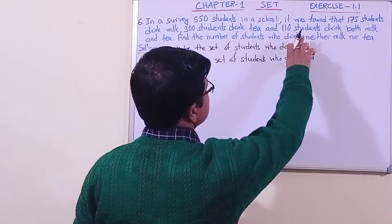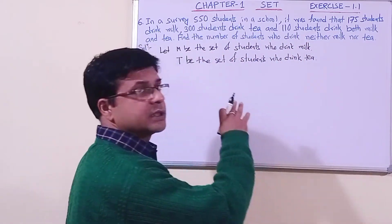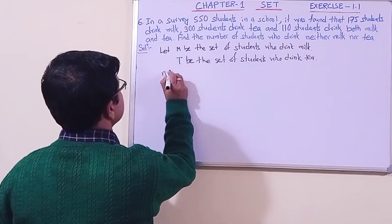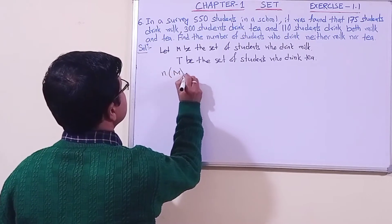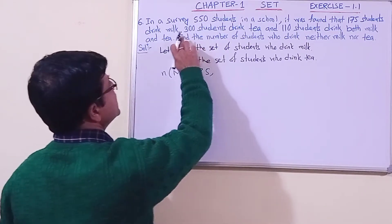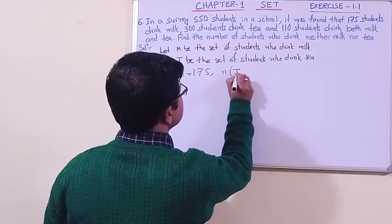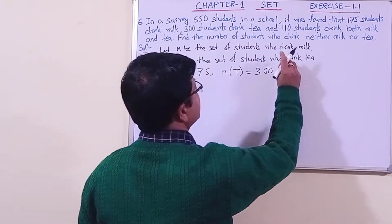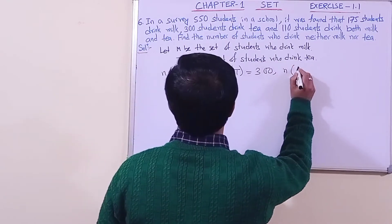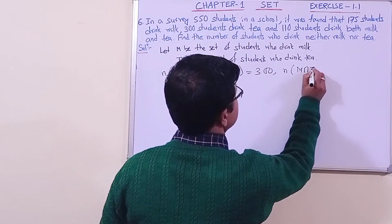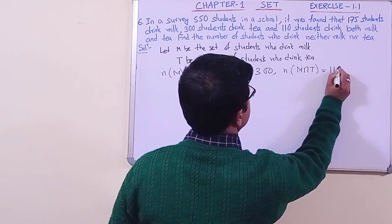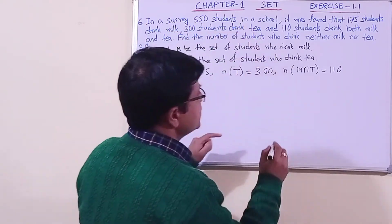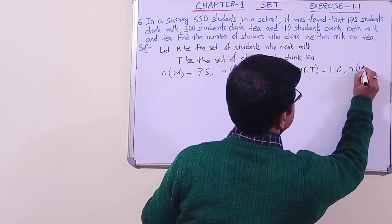Now let us write what is given to us. The cardinal number n(M) = 175. The cardinal number n(T) = 300. The intersection n(M∩T) = 110, since 110 students drink both milk and tea. Also, in a school of 550 students, the total universal set n(U) = 550.